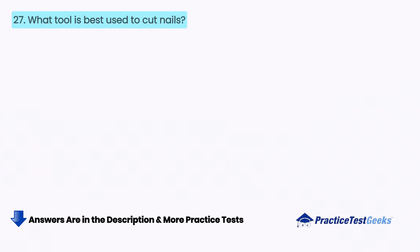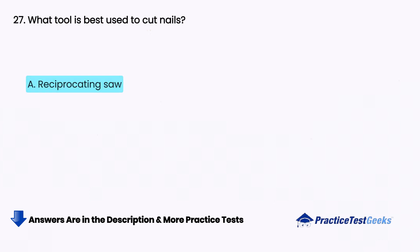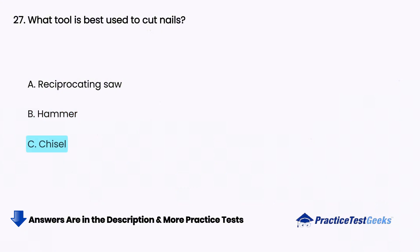What tool is best used to cut nails? A. Reciprocating saw, B. Hammer, C. Chisel, D. Circular saw.